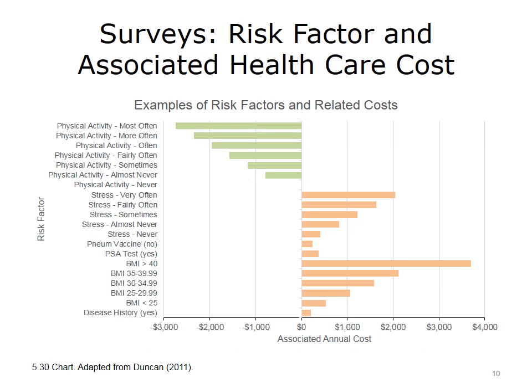This bar chart shows the positive and negative effects of various behavioral risk factors on annual health care cost. As shown, certain risk factors, such as increased levels of physical activity, are associated with lower annual health care costs, while increased levels of stress are associated with higher annual health care costs.